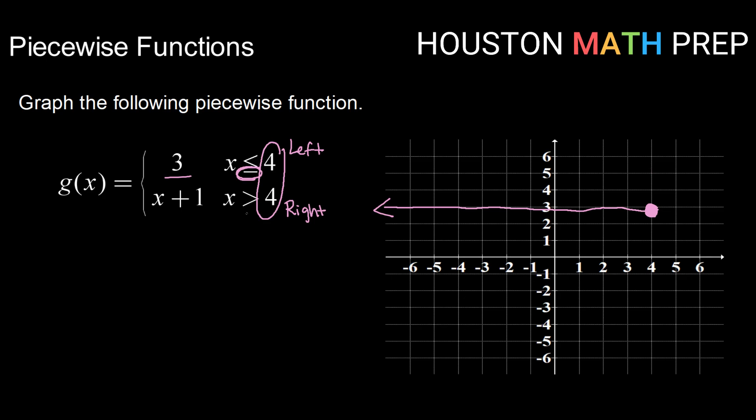Now the type of dot I'm going to put there depends on whether or not we have an equal to symbol. Here we do not. So I'm going to put an open circle at the point four five.